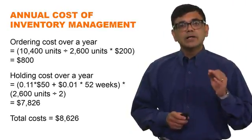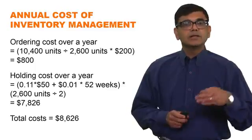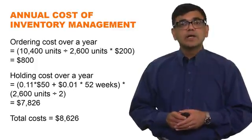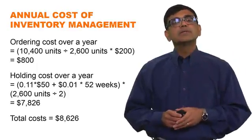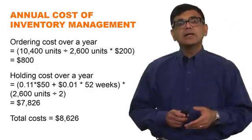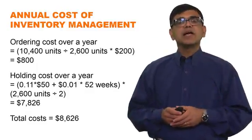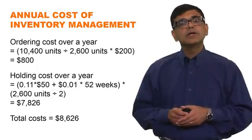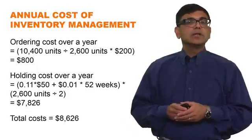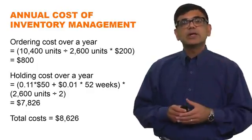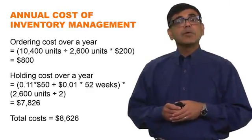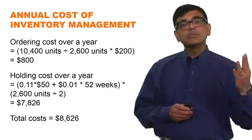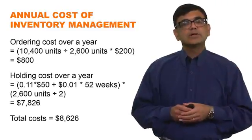Starting with the first question: given her current policy of ordering a certain quantity every time she places an order, what would be her total cost of inventory management? She was ordering 2,600 units per order and her annual demand across four kiosks was 10,400 units. So 10,400 divided by 2,600 gives four orders per year, multiplied by $200 per order, giving an ordering cost of $800.